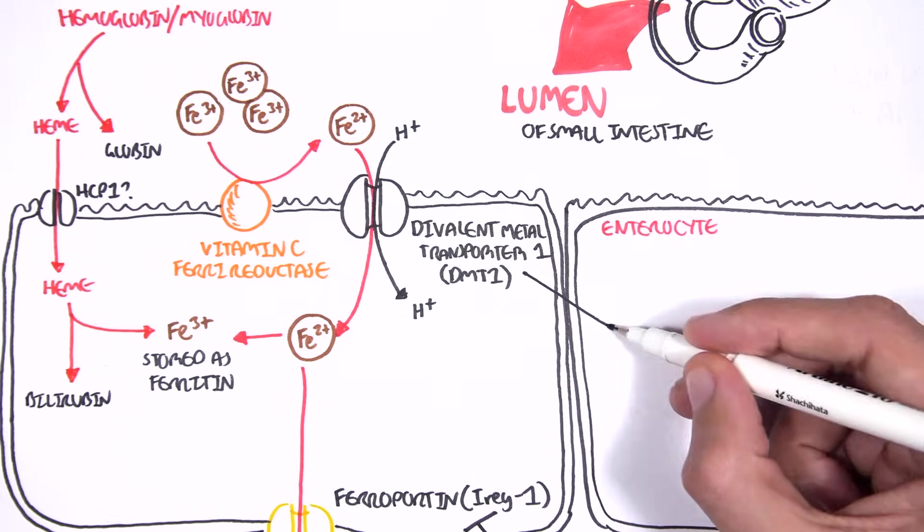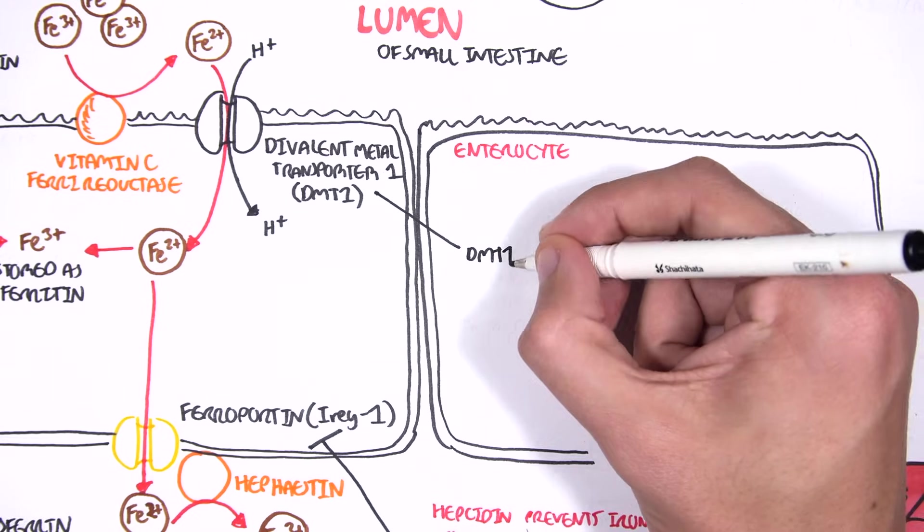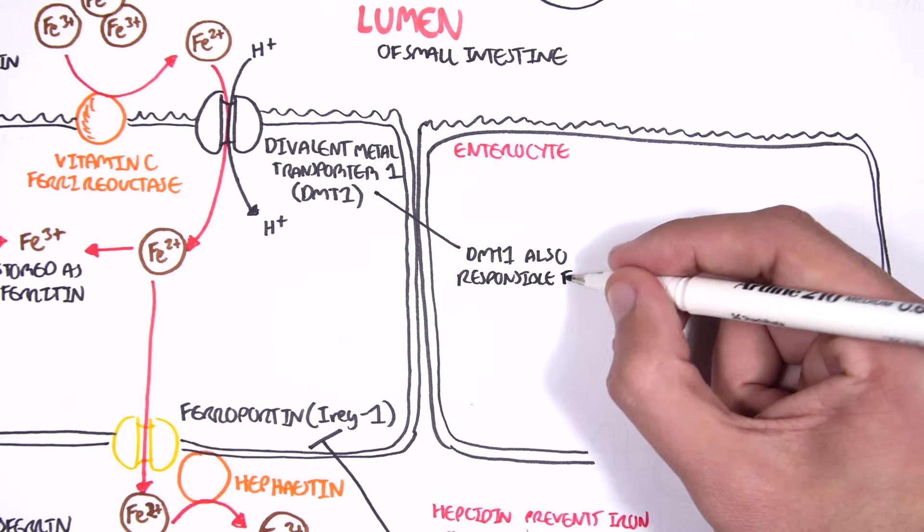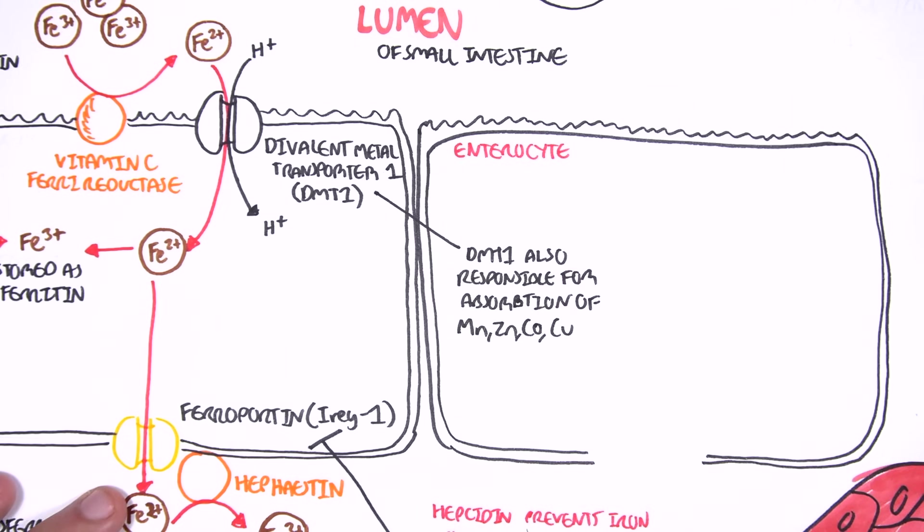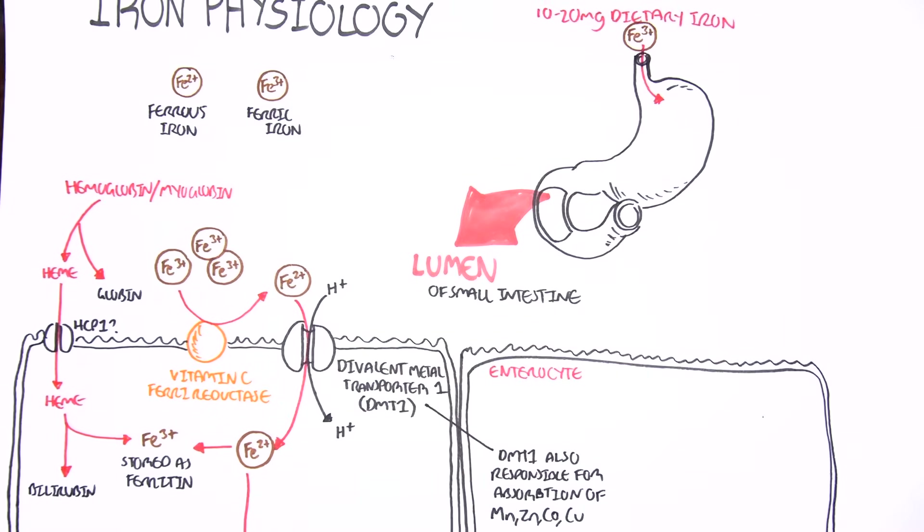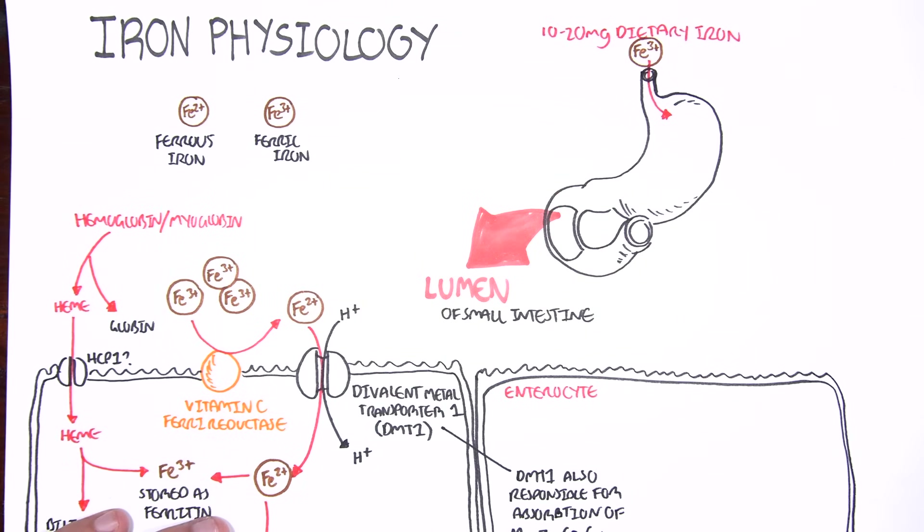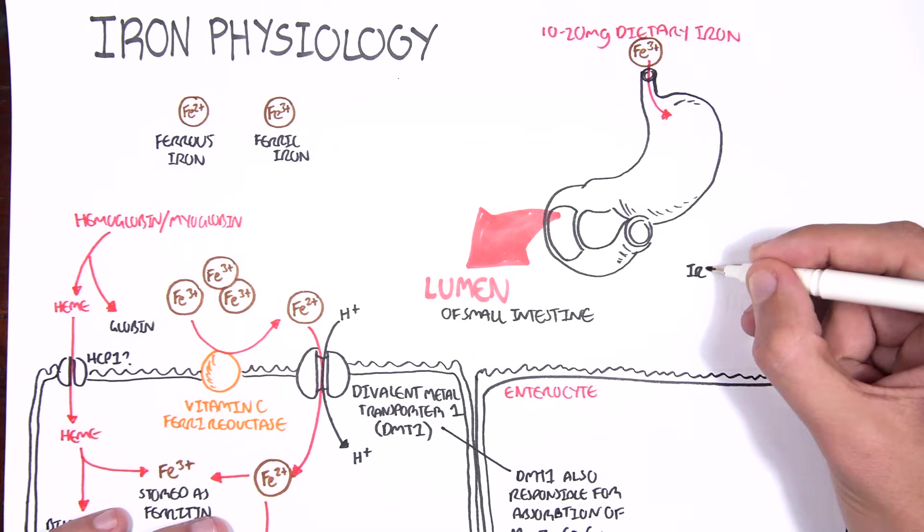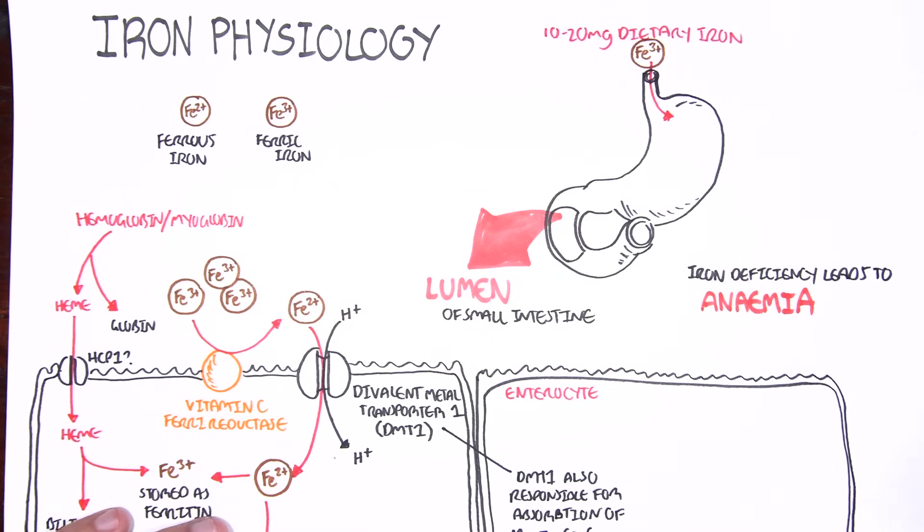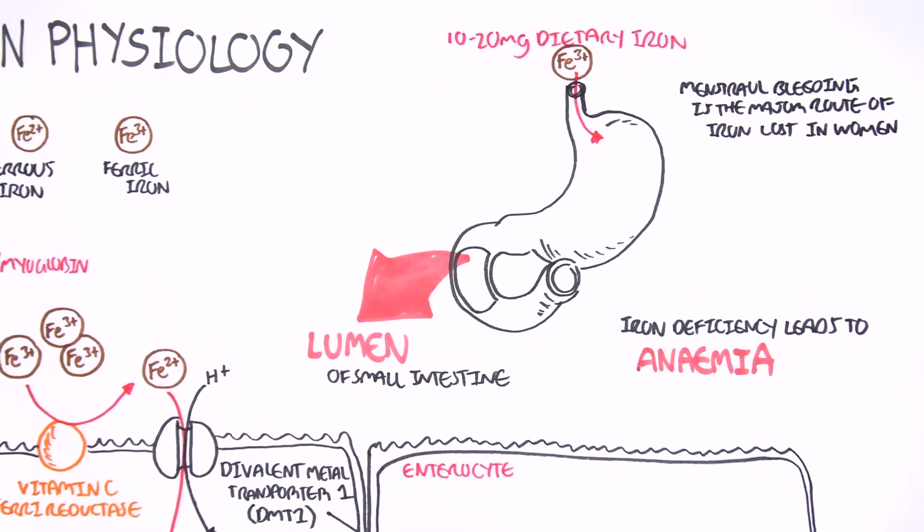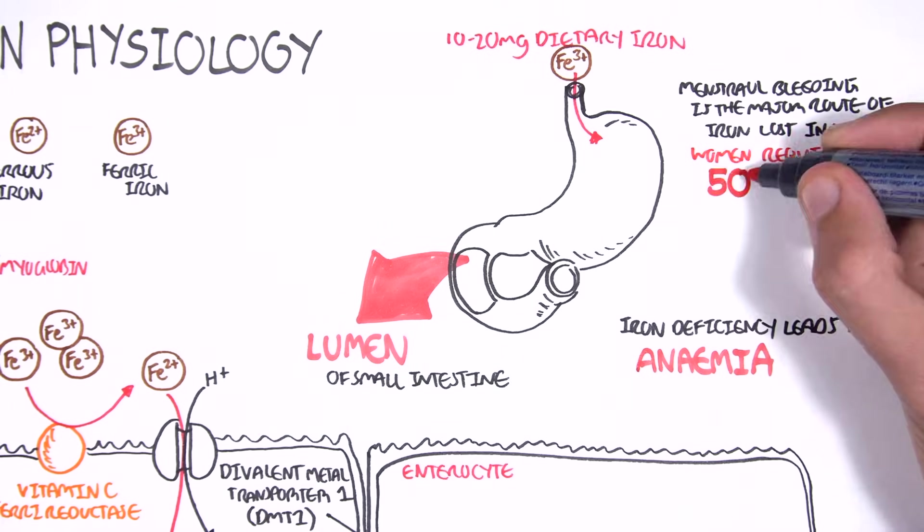Some things to point out in this diagram is the divalent metal transport 1, DMT1, which is important in the absorption of iron. But DMT1 is also responsible for the absorption of other metals, including zinc, copper, and cobalt, amongst many other things. Also, if you do not eat enough iron or consume enough iron or don't have enough iron in your body, you can suffer from iron deficiency, which leads to anemia or iron deficient anemia. Menstrual bleeding is the major route of iron loss in women. And therefore, women typically require 50% more iron than men.